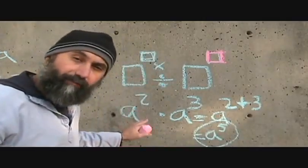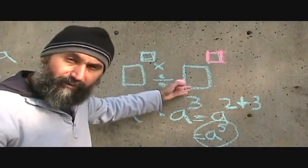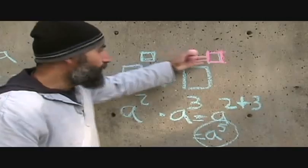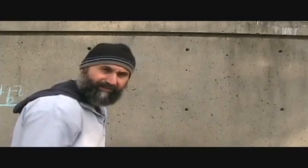So when it comes to multiplication and division, the bases have to be the same and the exponents can be anything. If you're multiplying two things with the same base, you add the exponents — they could be the same or different. If you're dividing two things with the same base, you subtract the exponents. Let's do an example.